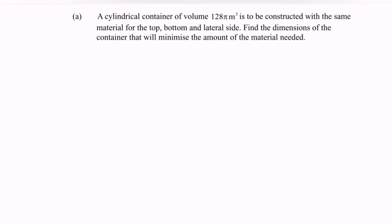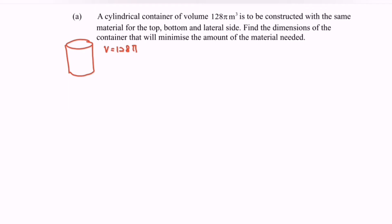Hi everyone, welcome to my channel. In this video I'm going to discuss an example for an optimization problem: a cylindrical container with volume V equals 128π cubic units, constructed with the same material for the top, bottom, and lateral side. Find the dimensions of the container that will minimize the amount of material needed.